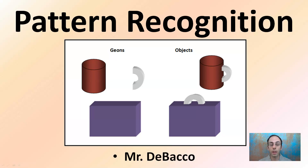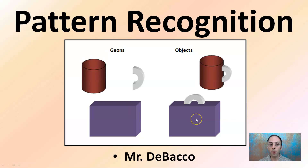Here we're going to look at pattern recognition. So if I have a bunch of shapes here, can you recognize them as any particular objects? If I kind of move that shape over, now it looks like I have a mug and a suitcase here.